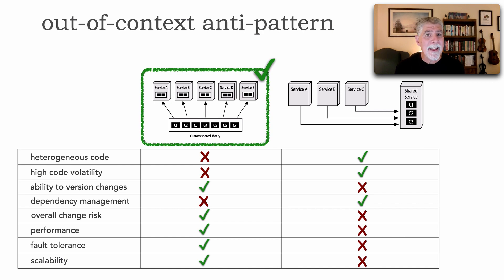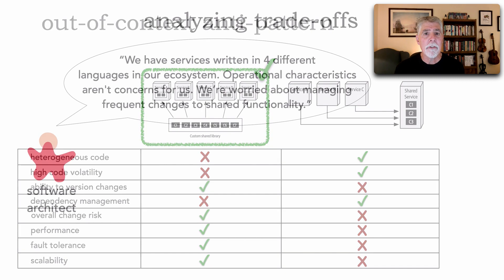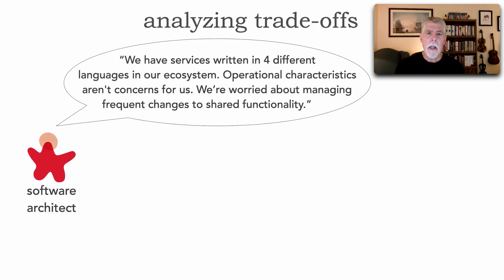But there's a second step that's required and that is our specific context. In other words look at what the architect is saying here. We have services written in four different languages in our ecosystem. Operational characteristics aren't concerns for us. We're worried about managing frequent changes to shared functionality.